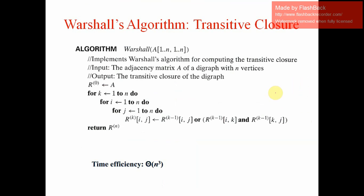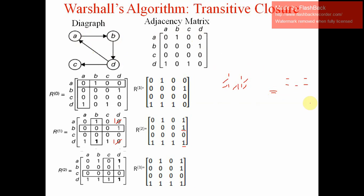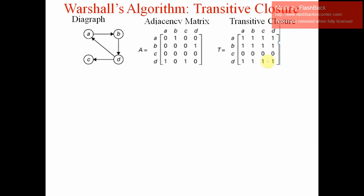This algorithm uses the formula we saw earlier, and the time complexity is O(N³). We find the adjacency matrix from the given graph and then find all paths, producing the final transitive closure matrix using dynamic programming. Thank you.